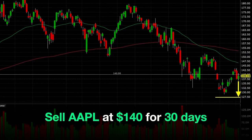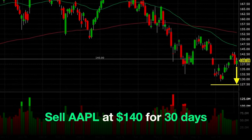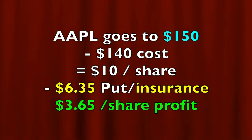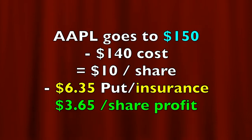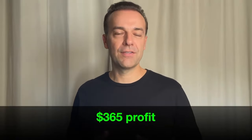If Apple were to drop in price below $140, we can still sell the stock at $140 anytime over the next 30 days. Now let's talk about what could possibly happen over the next 30 days. Let's say that Apple goes up to $150 — if that's the case, then you made just over $10 per share. But remember, it costs you $6.35 per share to buy that insurance. So in this scenario, you'd walk away with a profit of $3.65 per share because that protective put option you bought would expire worthless. So for the 100 shares, we have a net profit of $365.